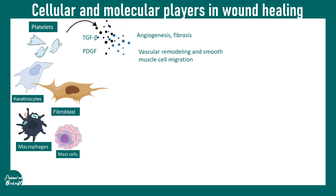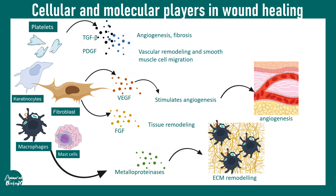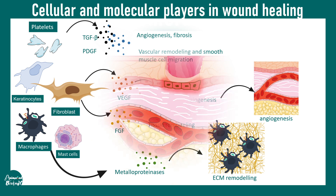Keratinocytes, fibroblasts, macrophages, and mast cells all secrete VEGF — vascular endothelial growth factor — which stimulates the angiogenesis process. Fibroblast growth factor, secreted by fibroblasts, helps in tissue remodeling. Metalloproteinases, secreted by macrophages and other cell types, can remodel the extracellular matrix, which is required for the end stage of the wound healing process.